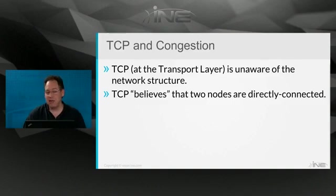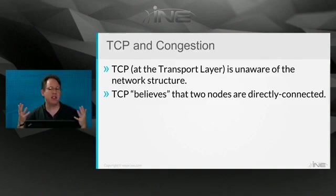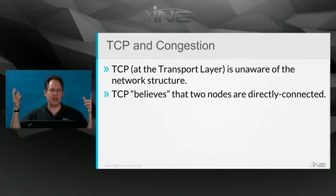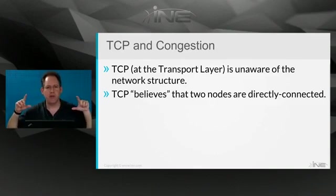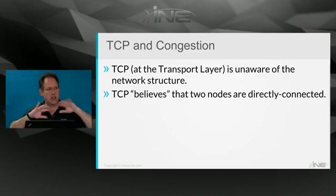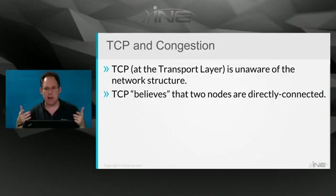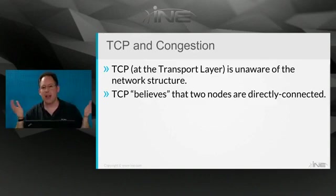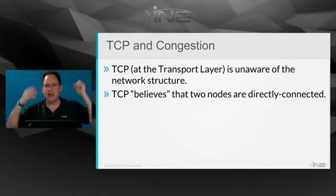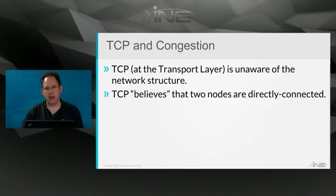TCP believes that two nodes are directly connected. We're talking about the Transmission Control Protocol. IP is responsible for determining if two devices are in different subnets or different VLANs based on the IP address. But the IP address is a layer three, network layer construct, not a transport layer construct.